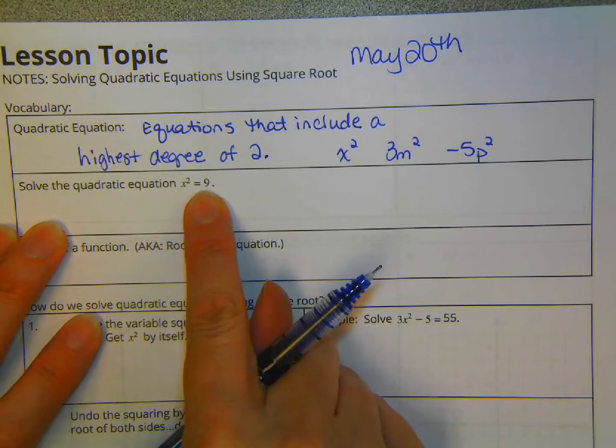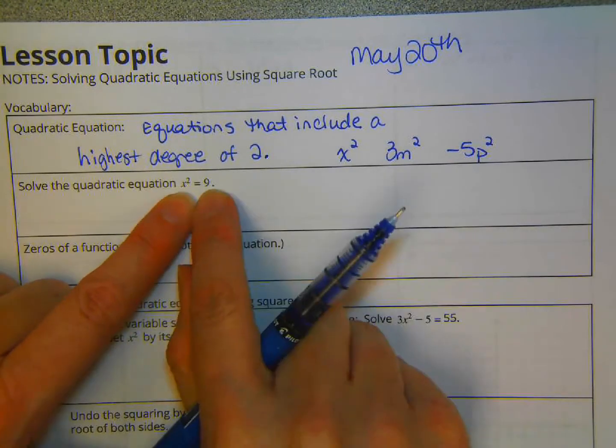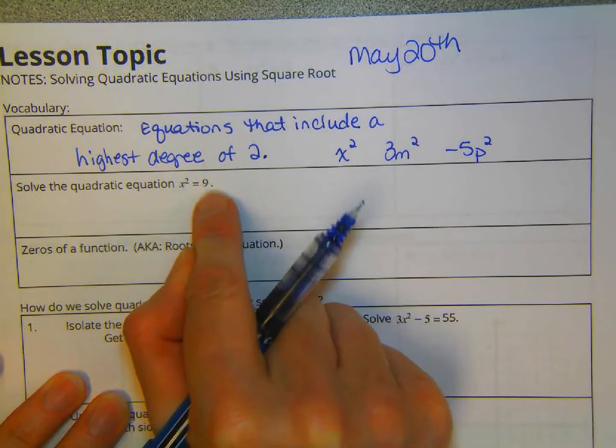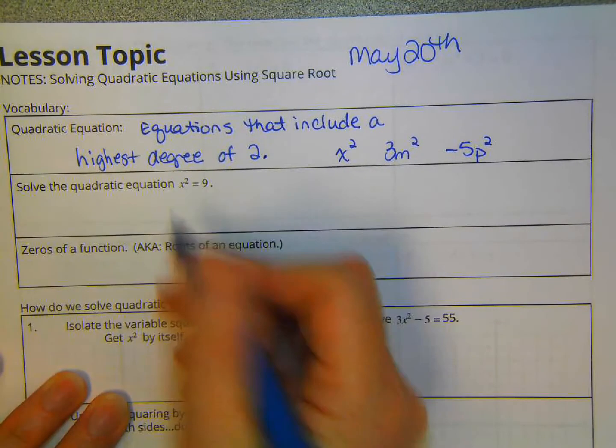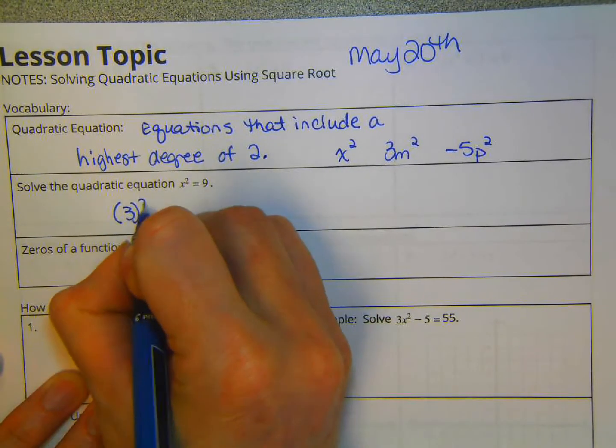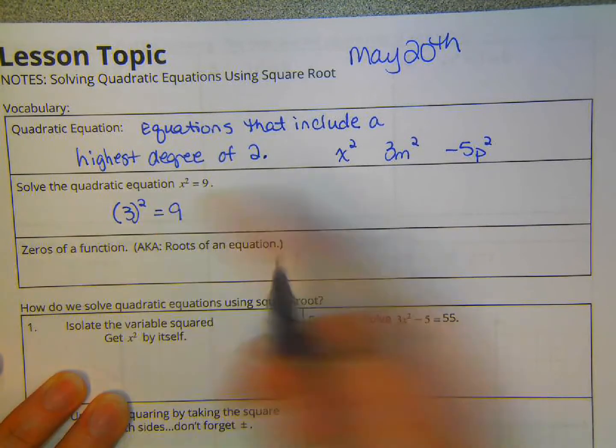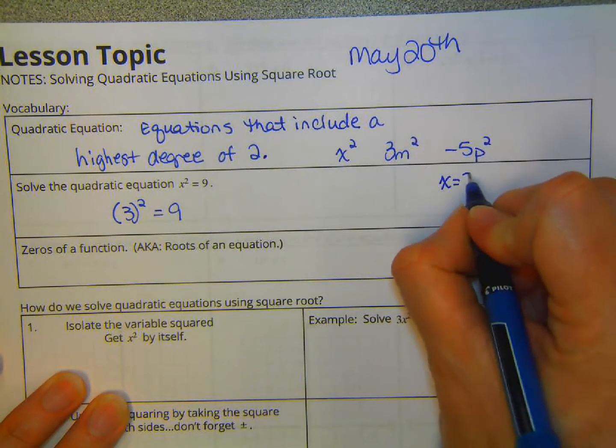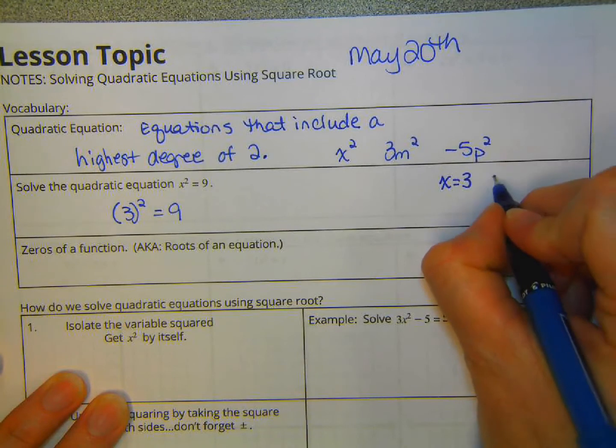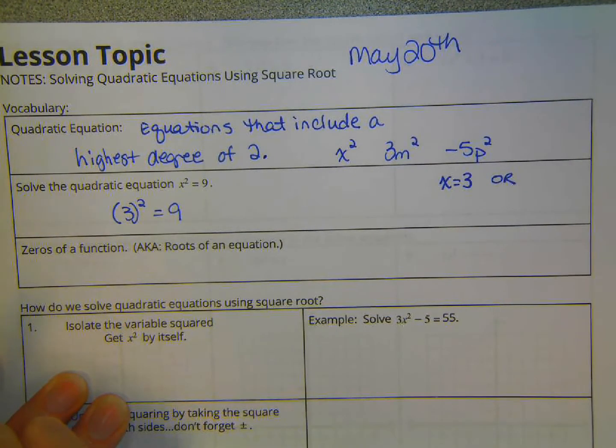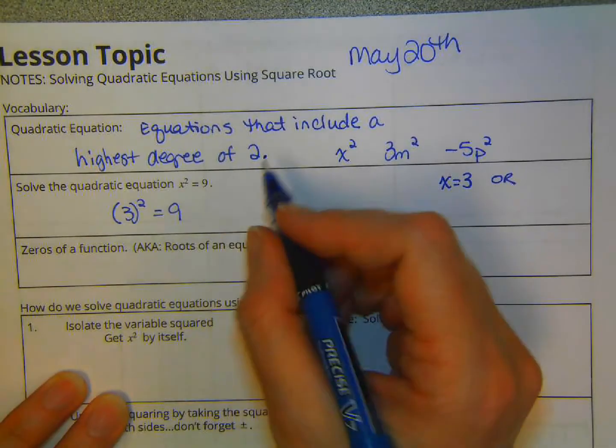So the question really is, what values of x make this true? So what can we square to get nine? Well, the obvious one is three. We know that three times three gives us nine. So x equals three, or what else could we square to get nine? What else can we multiply by itself to get nine?